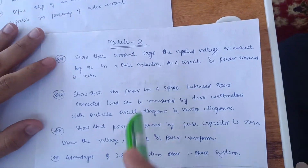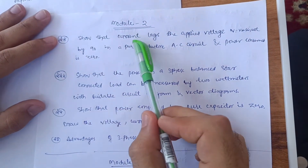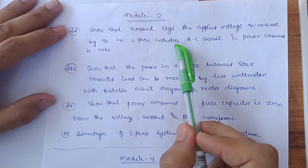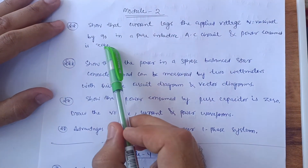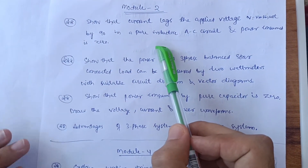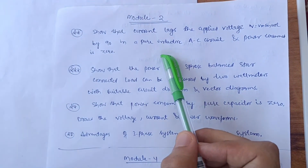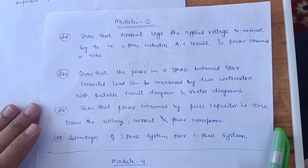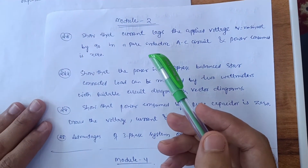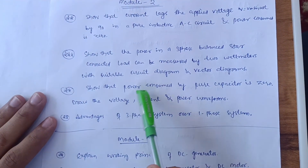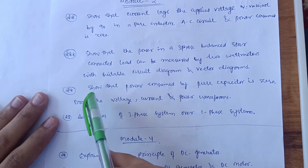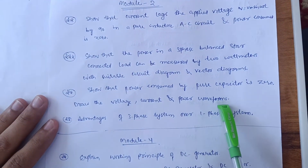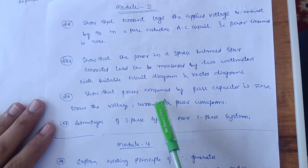Moving to Module 2: an important question is — show that current lags the applied voltage (v = Vm sin(ωt)) by 90° in a pure inductive AC circuit, and that power consumed is zero. There are problems here too, but I prefer you focus on the theory part as it is the difficult portion. The next most important question is: show that power consumed by a pure capacitor is zero, and draw the voltage, current, and power waveforms.